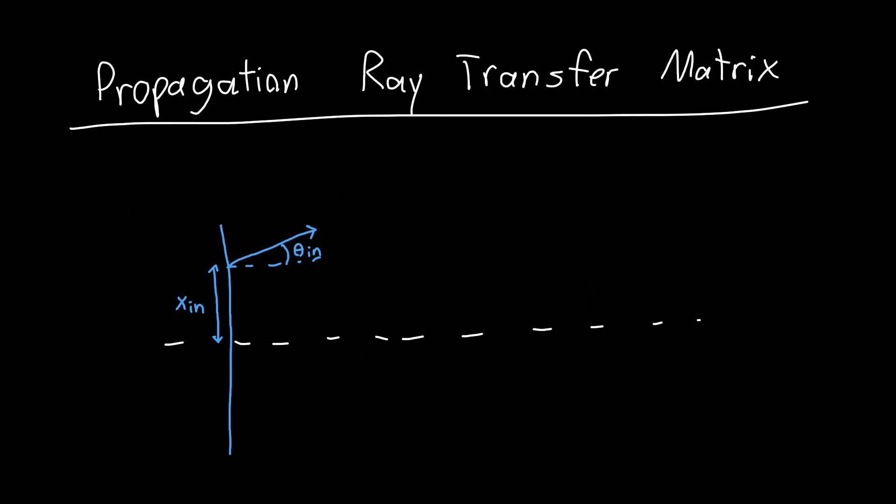And we want to know what happens to this ray as you propagate it a distance d. So what is the theta out and x out of the new ray? Well, we can just use geometry to do that. So if we figure out, okay, we've propagated the ray a distance d. Now, what does the new ray look like?